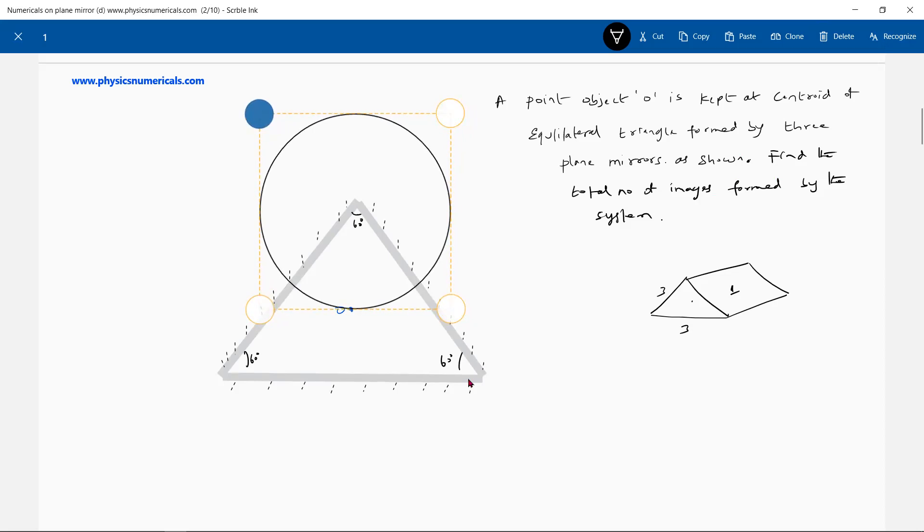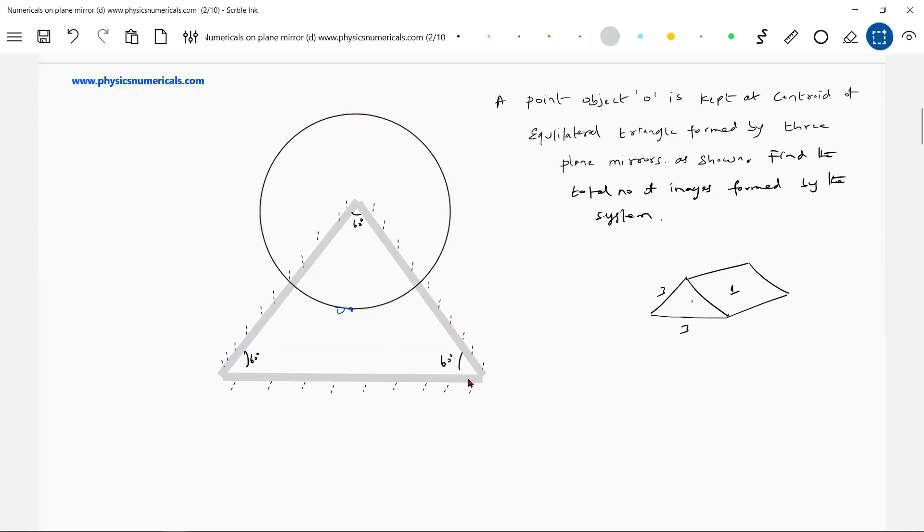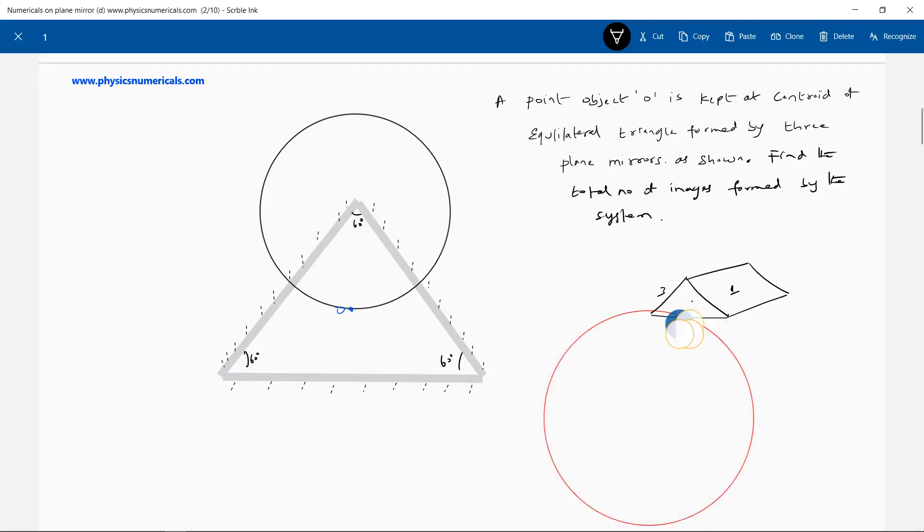What is the condition for a circle? The circle should be drawn in such a way that the center of circle should be at the intersection of the mirrors.